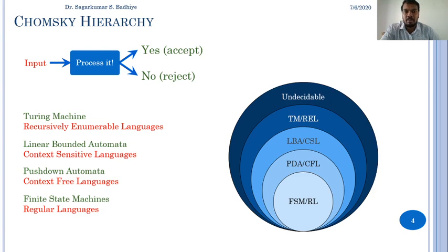Regular languages are also known as type 3 language. Context-free languages are also known as type 2 language. Context-sensitive languages are also known as type 1 language. And recursively enumerable languages are also known as type 0 language. In this course we are going to study all these languages, design all these machines, and we will see the peculiarities of all these machines in detail. Thank you.